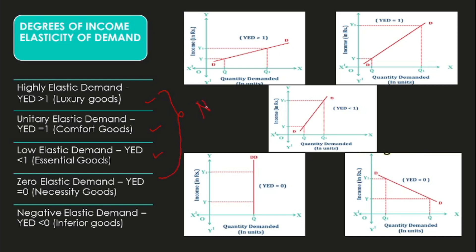When income elasticity is positive, it means the goods are categorized as normal goods. When the income elasticity is negative, which is only one case, these commodities are referred to as inferior quality commodities.